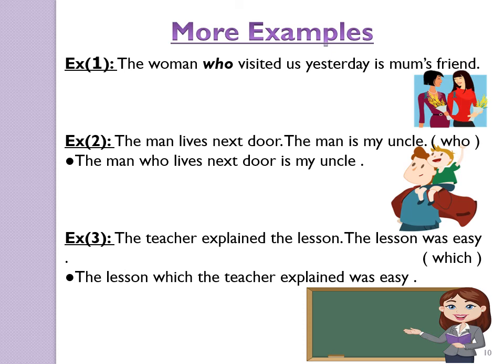Example two: The man lives next door. The man is my uncle. Rewrite these two sentences in one sentence using 'who'. Answer: The man who lives next door is my uncle. Here, 'the man' was repeated in both sentences, so we join them together with the relative pronoun 'who'.